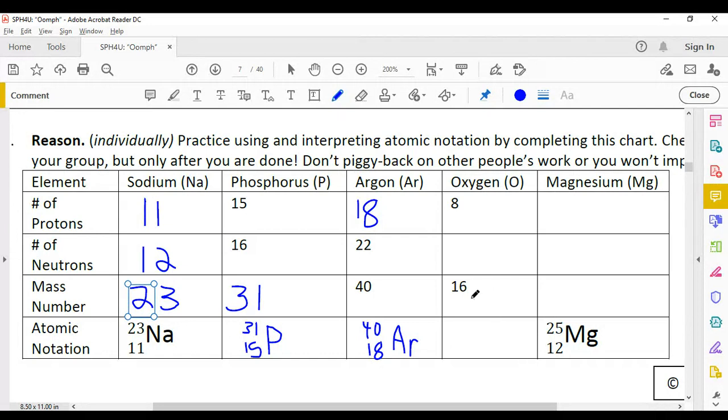Okay, let's figure this out. The mass number for oxygen is 16, which means the number of neutrons must be 16 minus 8. That equals 8. Let's write it out in atomic notation. The symbol for oxygen is O. The mass number goes in the upper position, that's 16. And the atomic number goes in the lower position, that's 8.